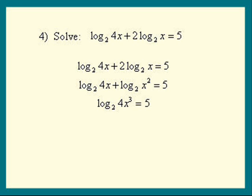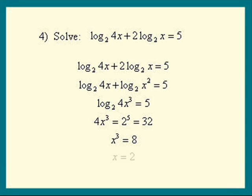By definition, 4x cubed equals the base 2 raised to the 5th power. 2 to the 5th is 32. Dividing by 4, we get x cubed equals 8. So 2 is the answer.